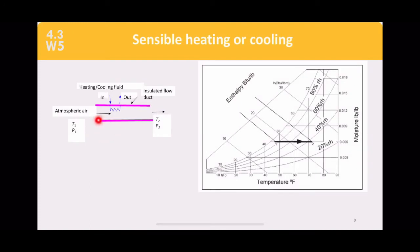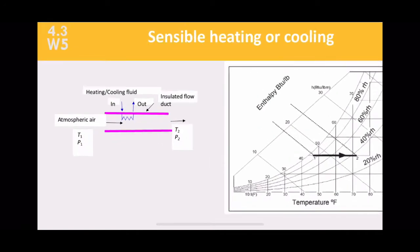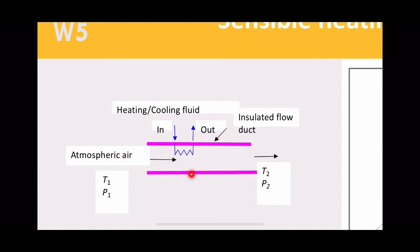Imagine an insulated flow duct where moist air enters with T1 and P1. Sometimes you need to calculate T2 and P2, or refer to a table. A heating or cooling fluid moves through a coil: for cooling, a cooling fluid absorbs heat from the atmospheric air; for heating, hot fluid transfers heat to the cold atmospheric air, so exit air is hotter.